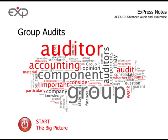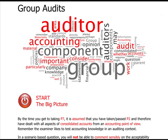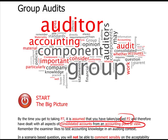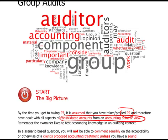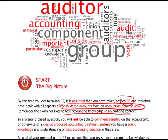As always, we look at the big picture. Group Audits: by the time you get to taking P7, it is rather assumed that you've taken and passed P2, and therefore have dealt with all aspects of consolidated accounts from an accounting point of view. That's quite important, because to audit group accounts you do have to understand what group accounts look like and feel like from an accounting point of view. That comes first; auditing comes second. The examiner likes to test your accounting knowledge in an auditing context, so you do need to understand an accounting concept first.